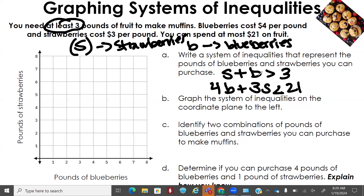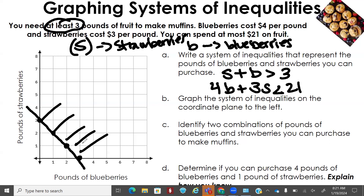Graphing the first inequality: if you have one pound of blueberries, you need at least two pounds of strawberries. If you have no blueberries, you need at least three strawberries. If two blueberries, at least one strawberry. If three blueberries, zero strawberries. Shade above that line because it says at least three, so we use a solid line — we can have three or more.